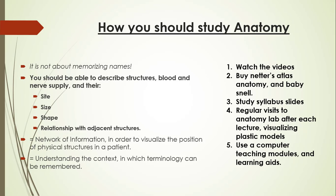Now, how should you study anatomy? It's not just about memorizing names. Memorizing names is essential, but you should be able to describe the structures — their blood supply, innervation, size, shape, and relationship with adjacent structures. You need a network of information in order to visualize physical structures in a patient. You should be able to close your eyes and describe how structures relate to each other and accurately locate them. It's about understanding the context in which terminology can be remembered.